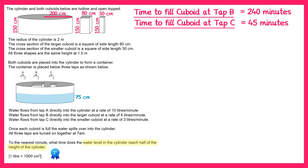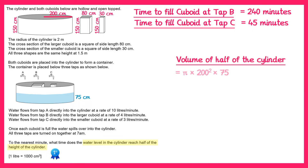So we're trying to find out how much water needs to go into the cylinder to reach this height. We'll start by working out the volume of half of the cylinder: pi times the radius squared — which is 200 — times the height of half the cylinder, which is 75 centimetres. This gives you 3,000,000π centimetres cubed.